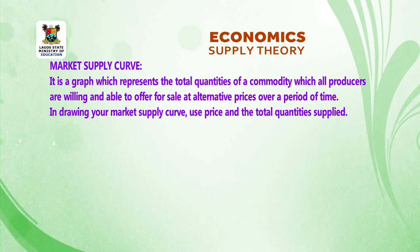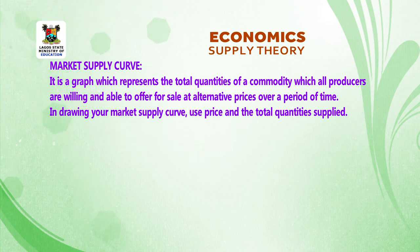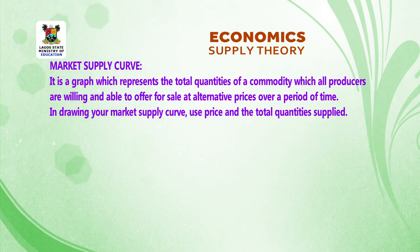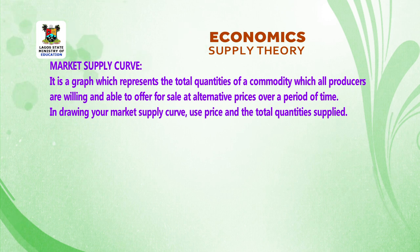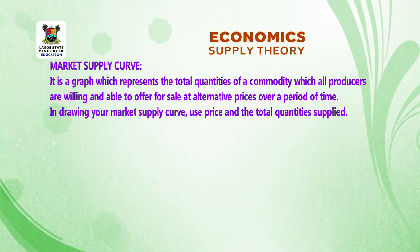Market supply curve: It is a graph which represents the total quantities of a commodity which all producers are willing and able to offer for sale at alternative prices over a period of time. When drawing your market supply curve, use price and the total quantity supplied.